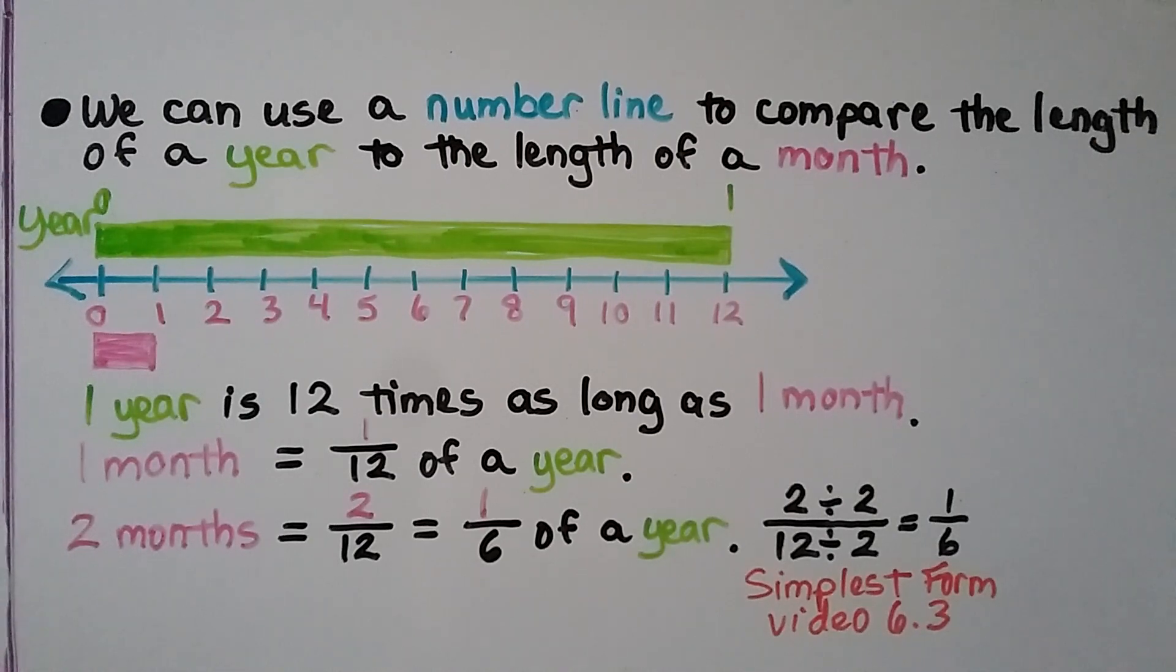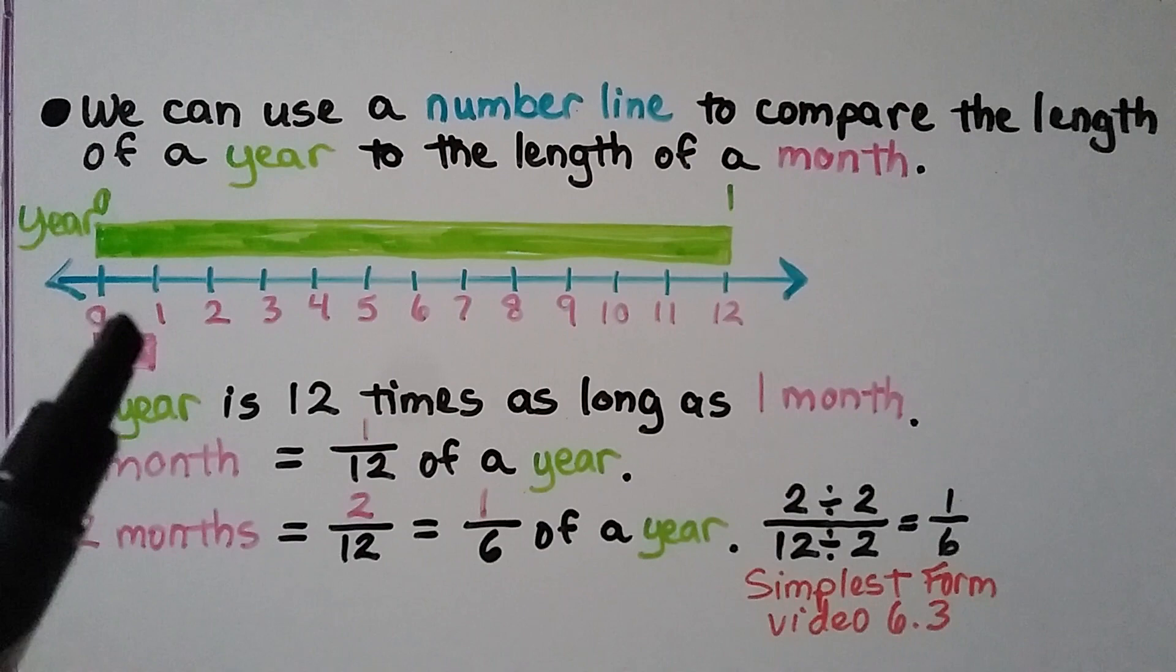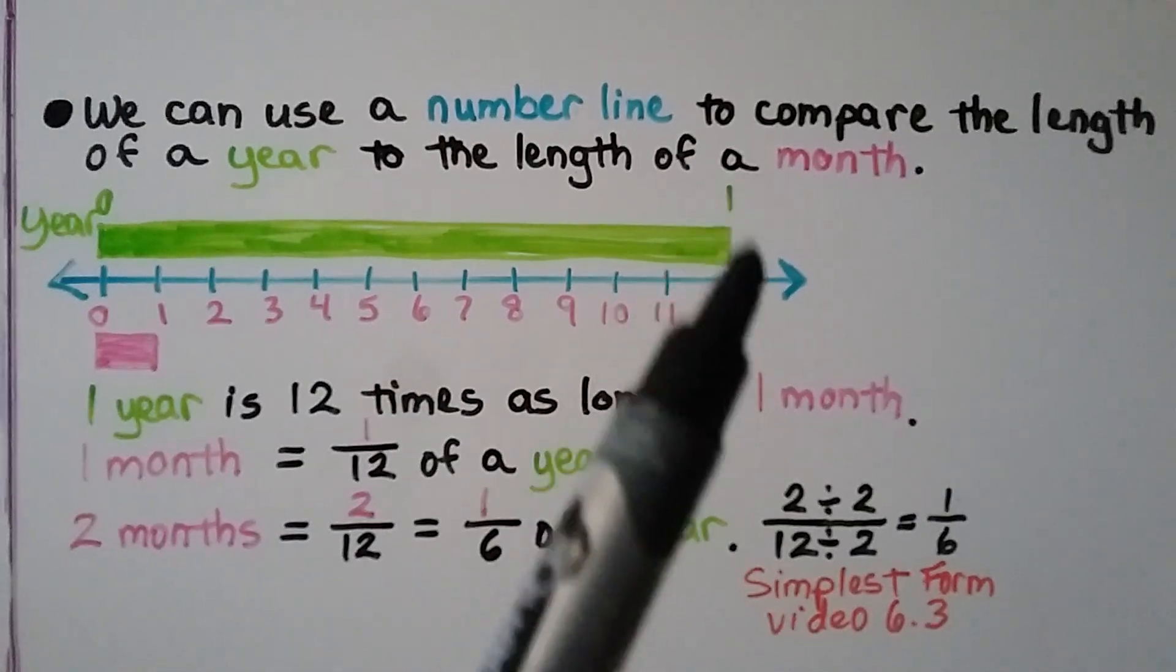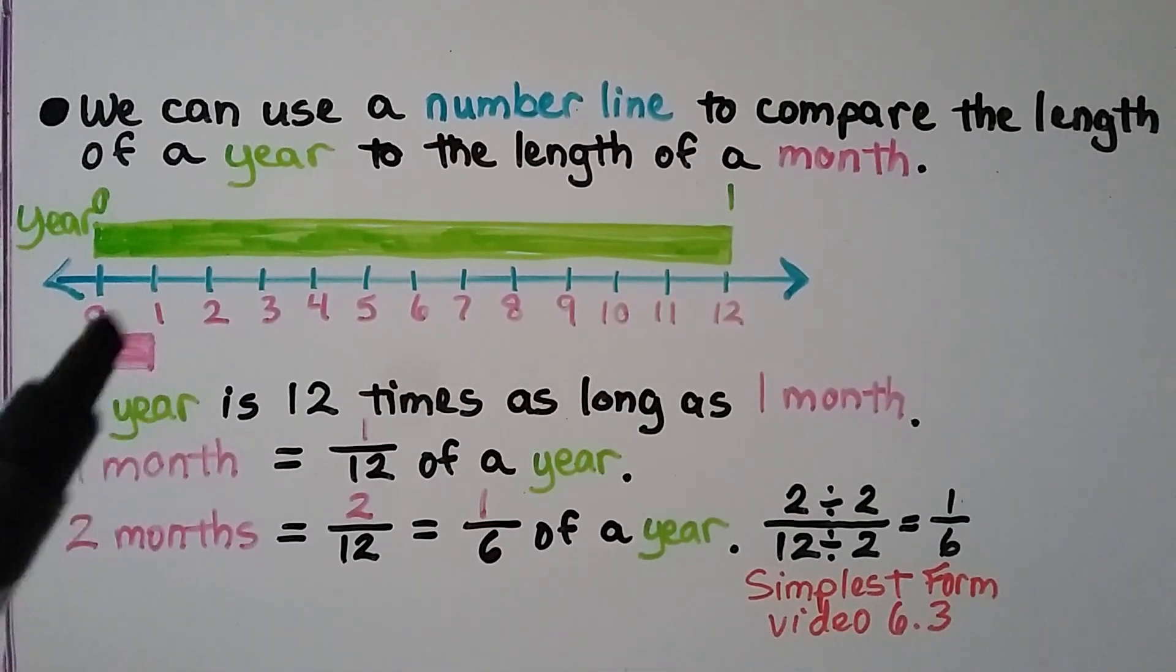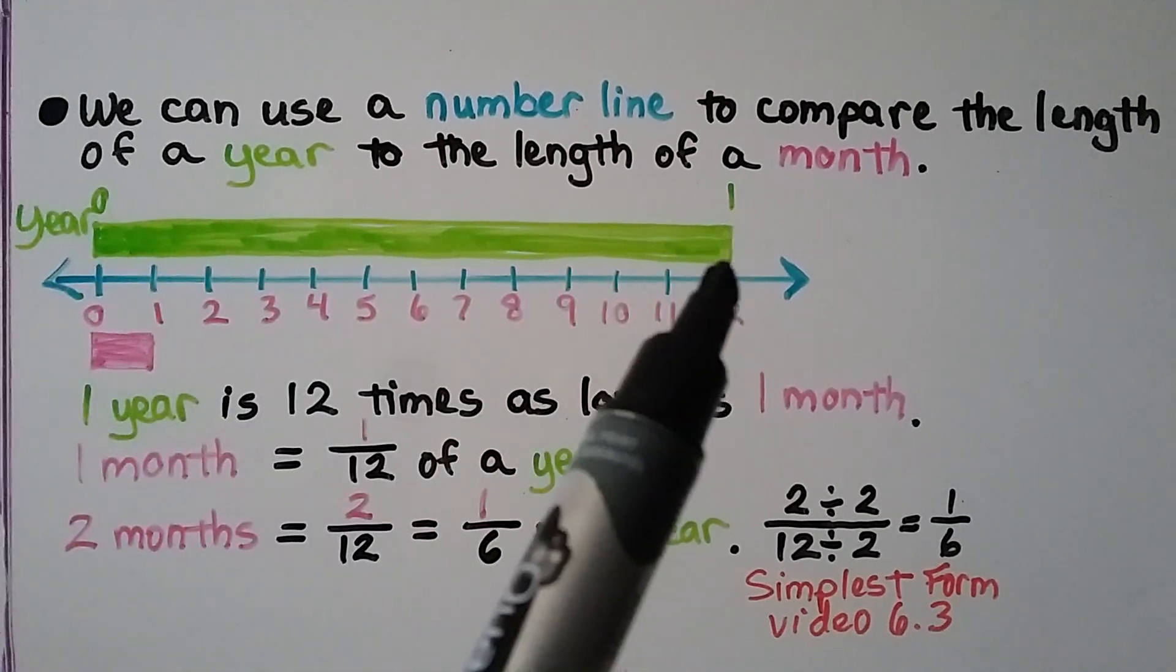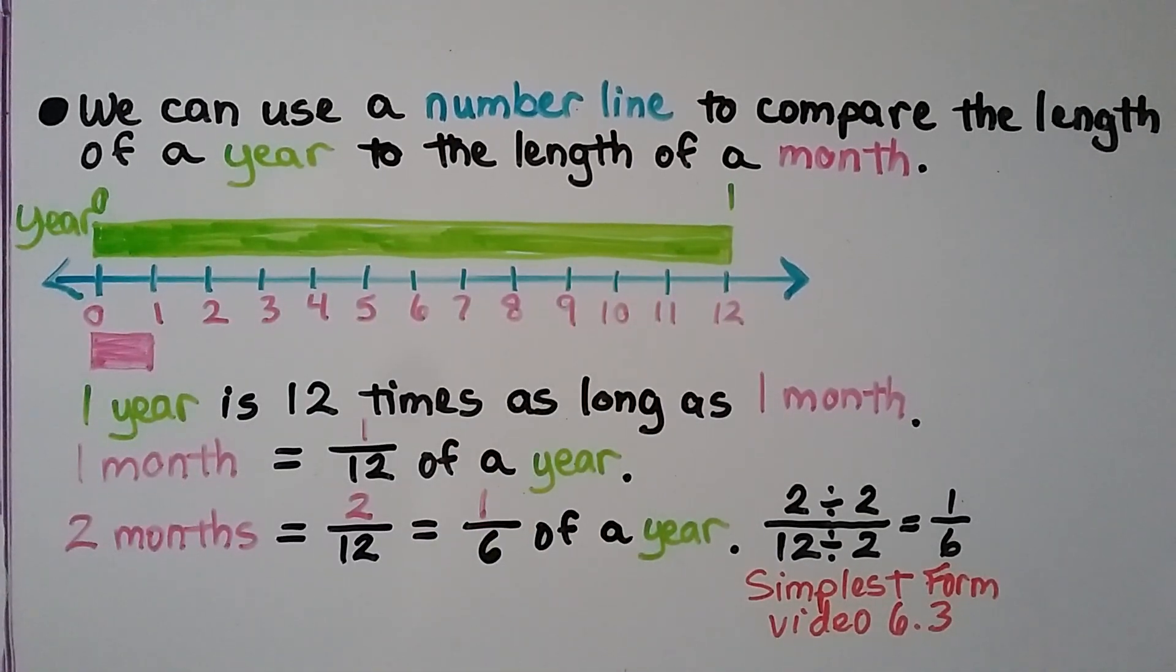We can use a number line to compare the length of a year to the length of a month. There are 12 months in 1 year. So here is 1 little month, and this is 1 entire year. 1 year is 12 times as long as 1 month. 1 month is equal to 1/12th of a year. So 2 months would be equal to 2/12ths. And we can put that in simplest form as 1/6th of a year.